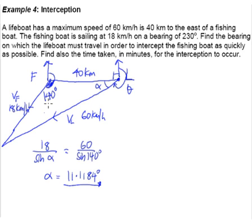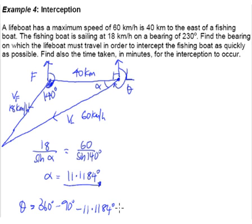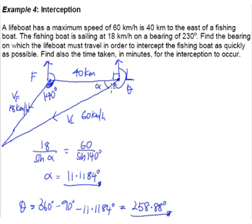So this is our alpha, and therefore to find theta it will simply be 360 degrees minus 90 degrees minus 11.1184 degrees. From here we get our theta value of 258.88 degrees. This will be the bearing that the live boat will have to travel in order to intercept the fishing boat — so we've found the first part of the answer.